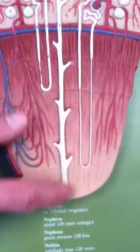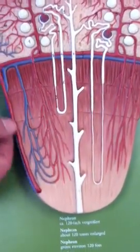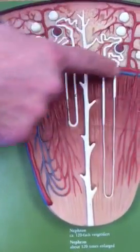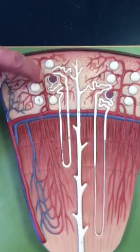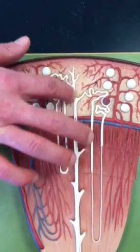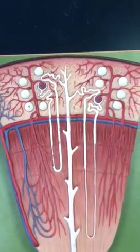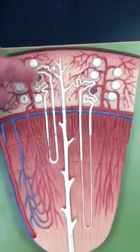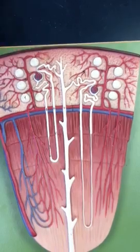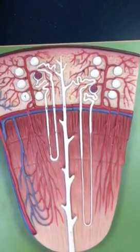The distal convoluted tubule ultimately dumps into a collecting duct, which leads through the pyramid and heads down towards the calyces. We also have the interlobar arteries and veins between the pyramids, the arcuate arteries and veins wrapping around the top, and the interlobular arteries and veins. We can also see the peritubular capillaries wrapped around the proximal and distal convoluted tubules. Each one of these structures — including all of the tubules and the corpuscle — is collectively called a nephron, which functions as the actual filtering unit within the kidney.